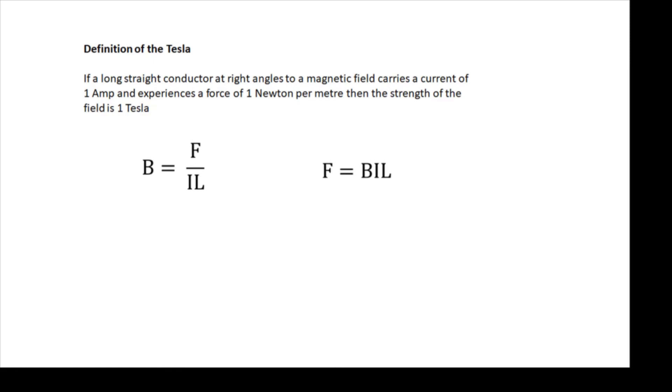So a tesla is a newton per amp meter. That's your definition of the tesla. And if you rearrange that, you get a very useful equation, F equals BIL.